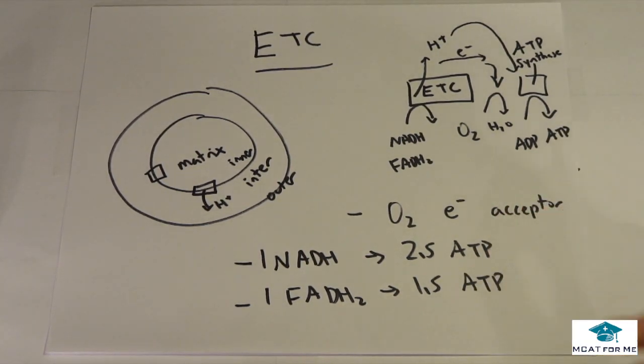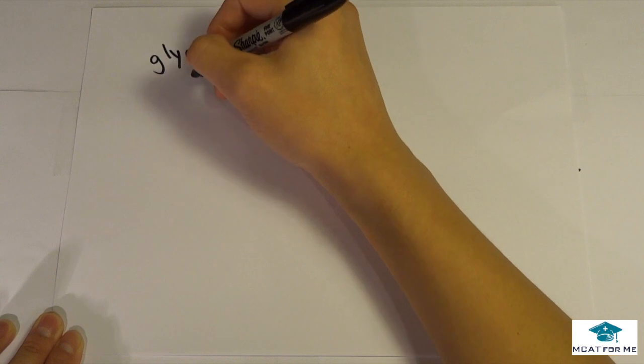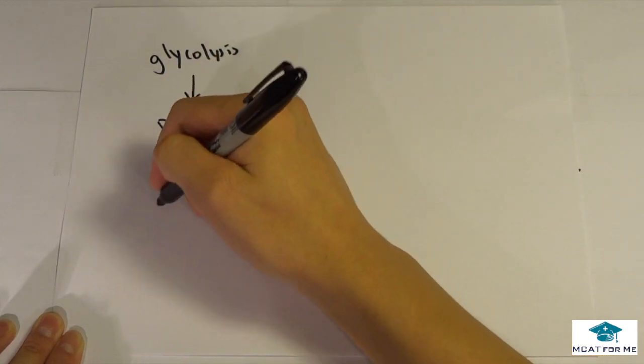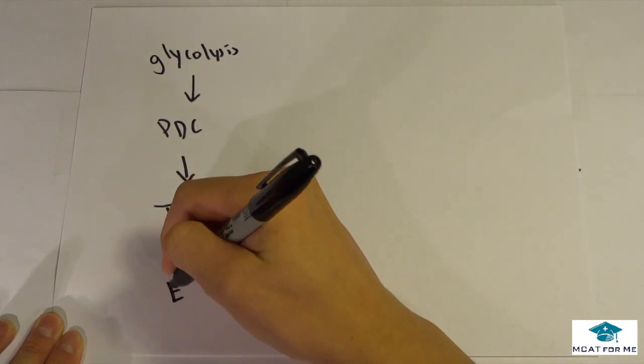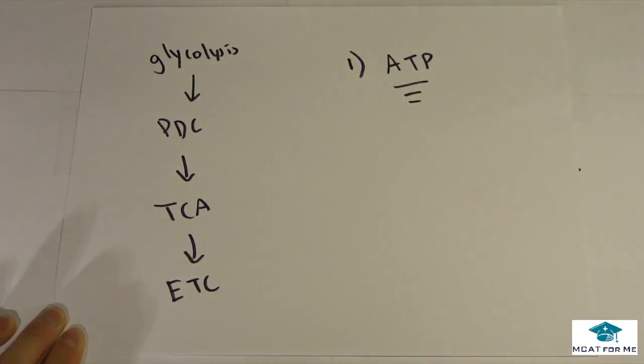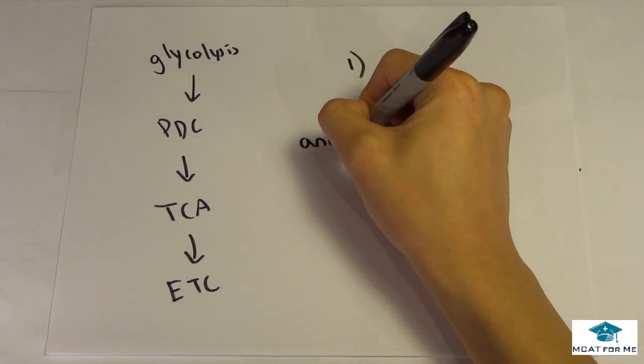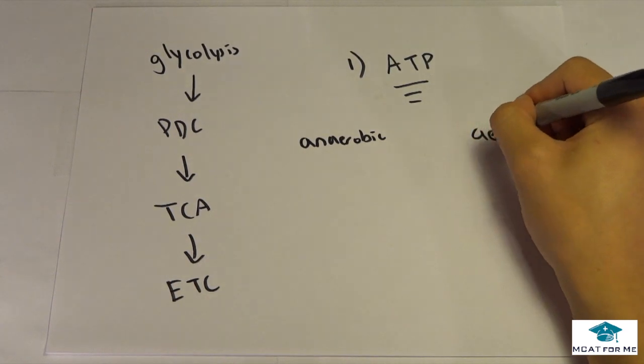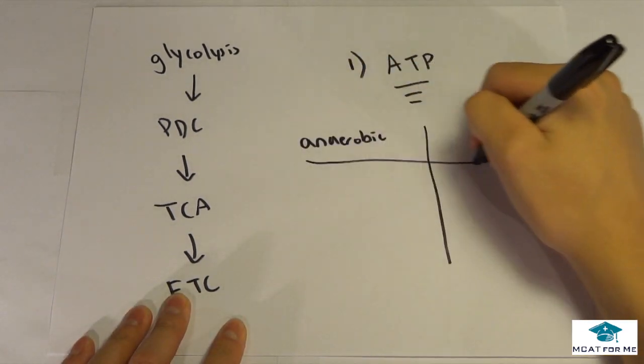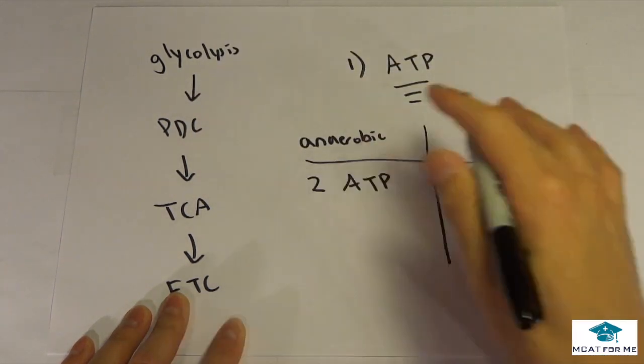So just to recap, we have this glucose that will go into glycolysis, then it will go into the PDC, into the TCA, and finally into the electron transfer chain. And so we know that our ultimate goal is ATP. That's really what the ultimate goal of converting glucose down and going all the way down these products into the electron transfer chain is, that we want to produce ATP. And if they compare anaerobic versus aerobic, we know that we produce 2 ATP in anaerobic. All that happened was glycolysis. We only produce 2 ATP there.